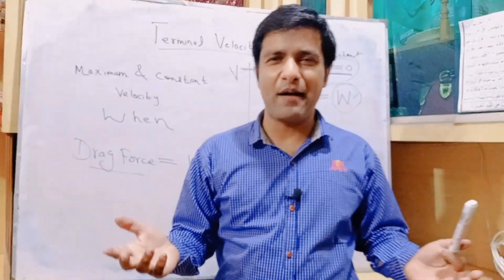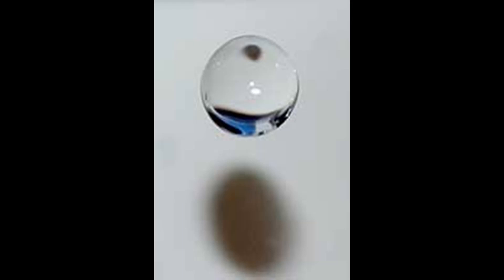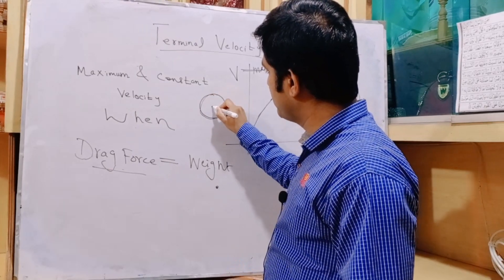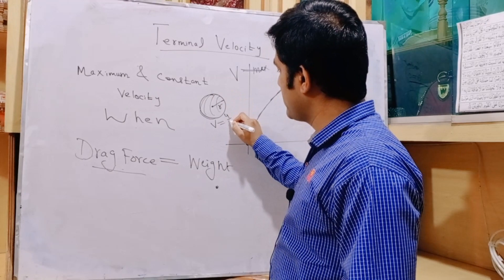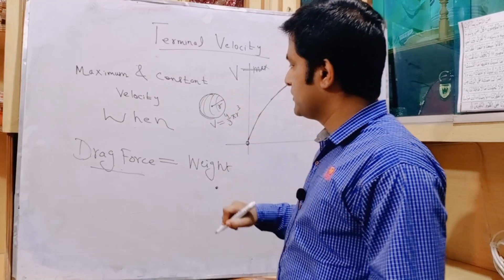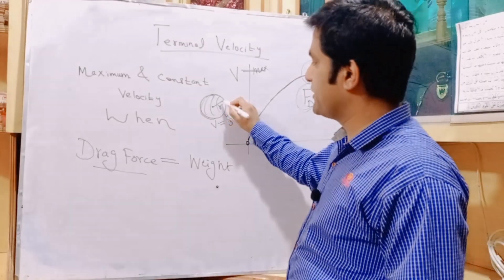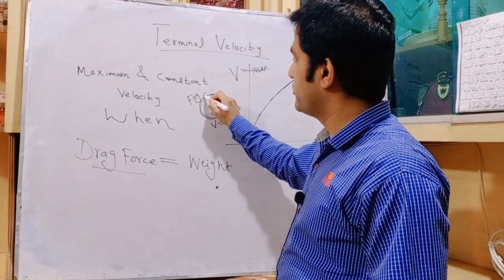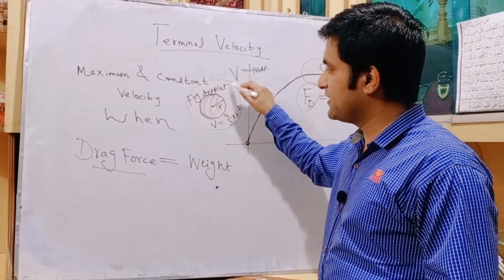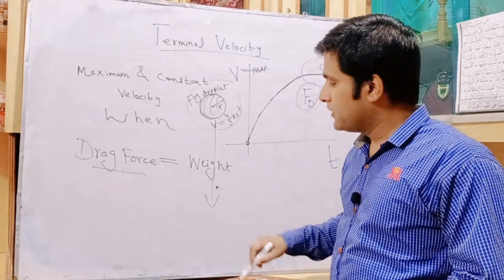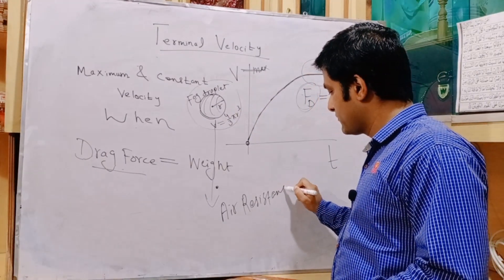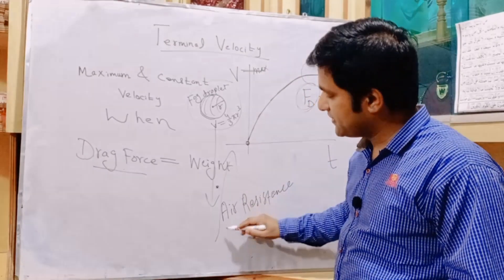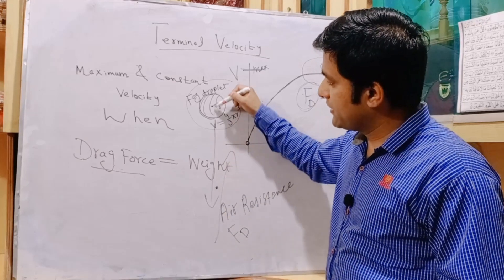I've given you the paratrooper's example, but we can take another example — a fog droplet. The fog droplet is round in shape, it has some radius and some volume. The volume of a sphere is 4/3 π r³. This is the fog droplet falling in the air, so it will experience air resistance. The air resistance acts opposite in direction — this is the drag force — and its weight acts downwards.